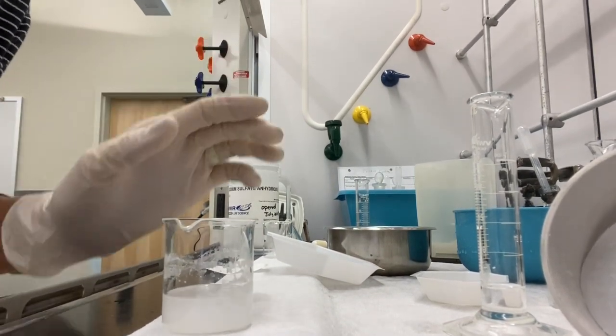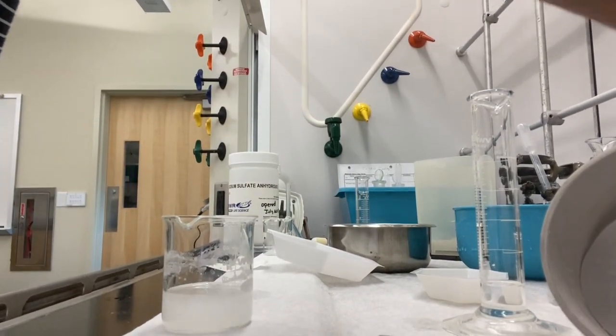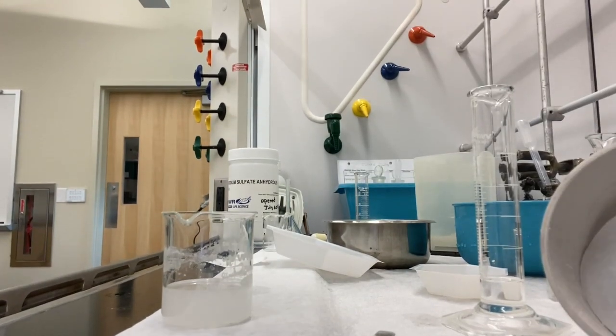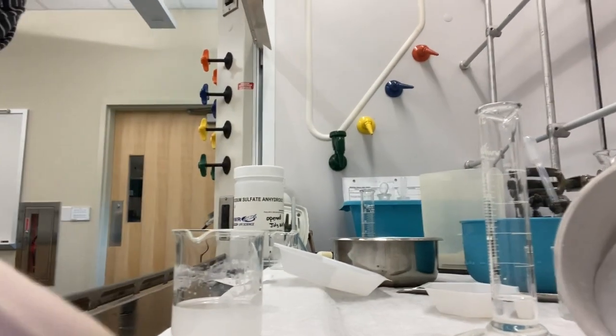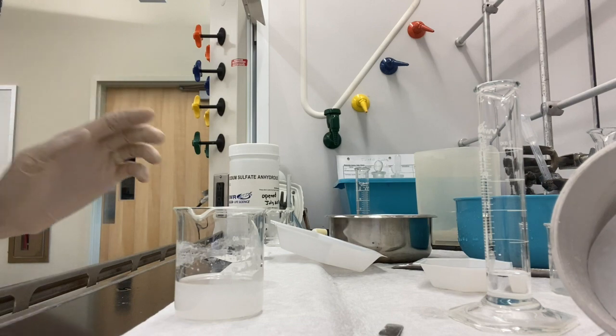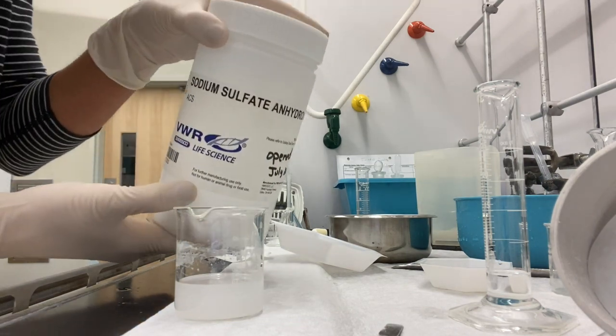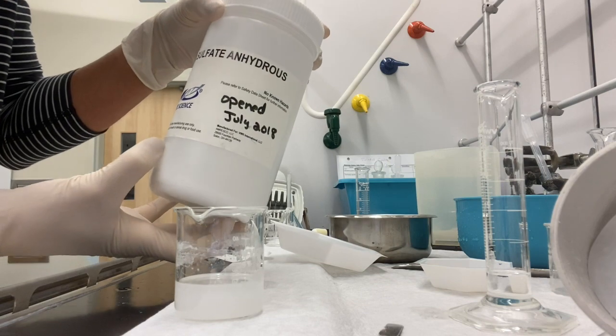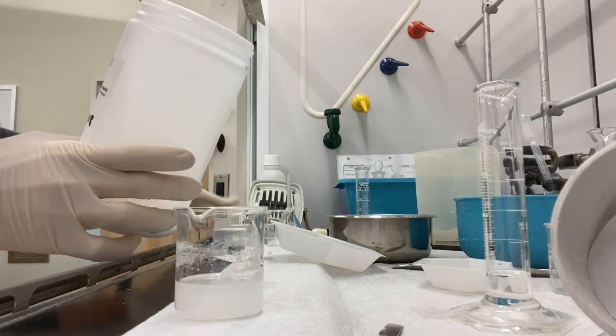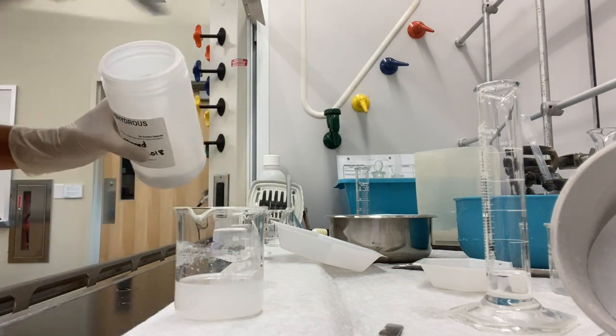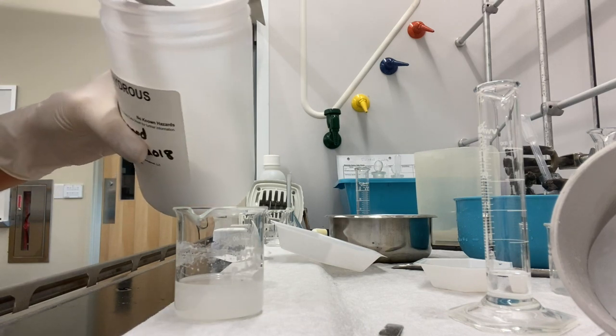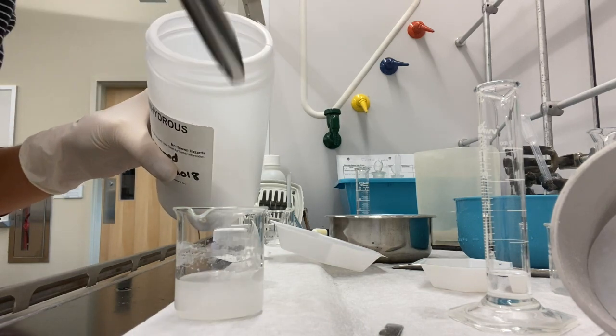So the way that we can fix that is by adding some drying agent. And so what we're going to use is something that's going to soak up that water. And for this experiment, we're going to use sodium sulfate. You see it's anhydrous. So this sodium sulfate, once we add it, will stay solid. It won't dissolve. It'll just sit on the bottom.